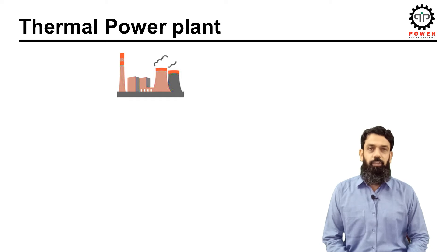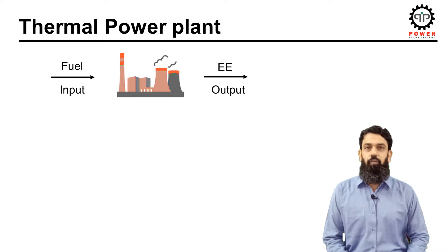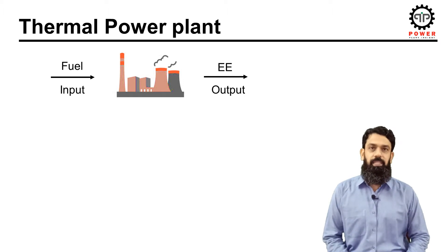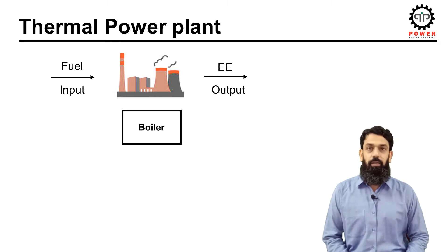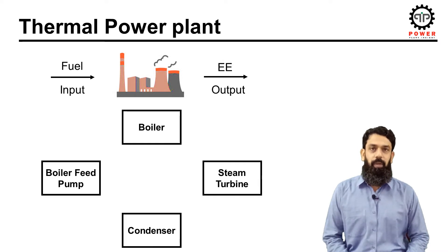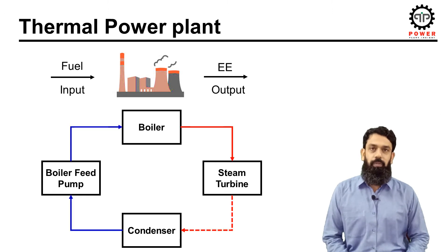A thermal power plant is a unit that converts the heat energy of fuel into electrical energy. A simple thermal cycle or Rankine cycle using water as a working fluid consists of the following main components: boiler or steam generator, steam turbine, condenser, and a boiler feed water pump. All these components work in a closed loop in the thermal cycle.